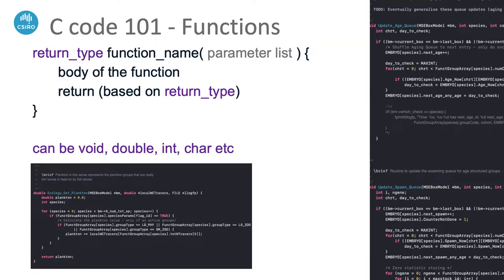The vast majority of the code is drawn up using functions. You define what kind of value it's going to return — in some cases it's actually returning a real number like a double, for example 'ecology_get_plankton' returning a double plankton value. You can have an integer return, like a yes/no value. Most of the routines you'll see in Atlantis are voids, which means you can put in a return to pass back to the bigger program, but you don't have to — at the end of a void it's not going to send back a message; everything it had to do is done within the body of the routine.